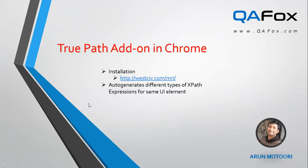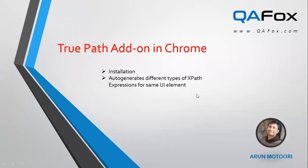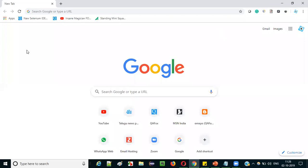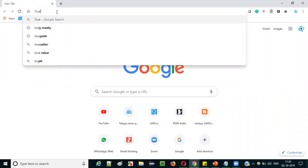In this video session I am going to practically demonstrate how to install TruePath add-on in Chrome browser. It's not only available in Chrome — you can also get TruePath add-on in Firefox browser, which I will explain in the next video session. But in this current session I will explain how to install TruePath add-on in Chrome browser and how to auto-generate different types of XPath expressions for the same UI element using this add-on.